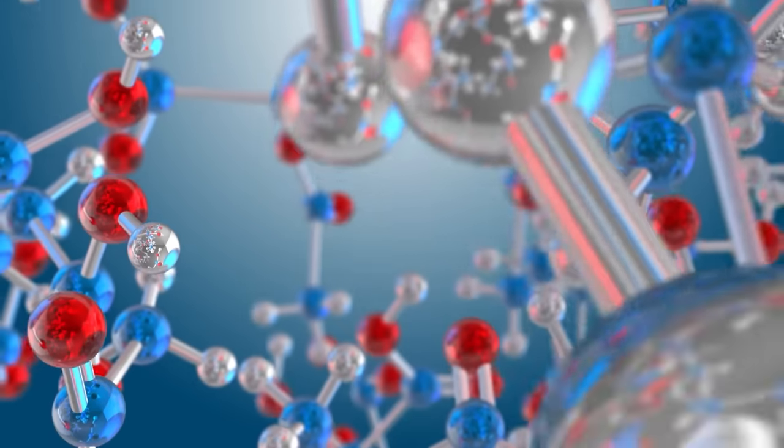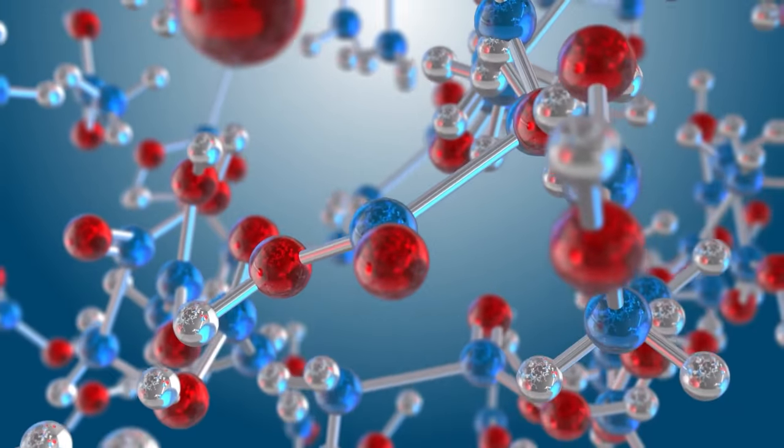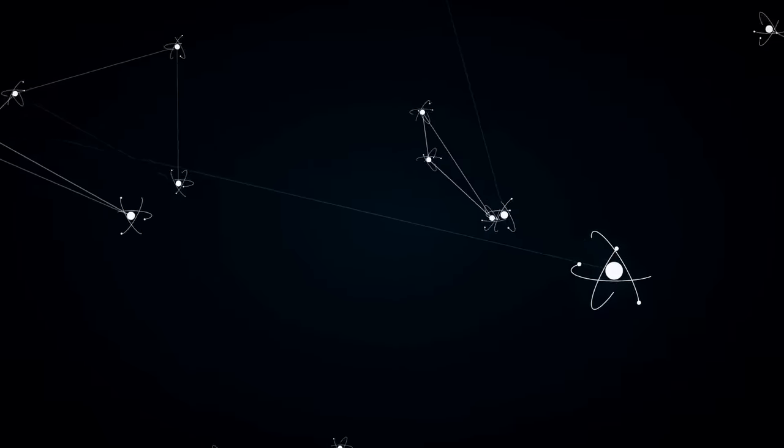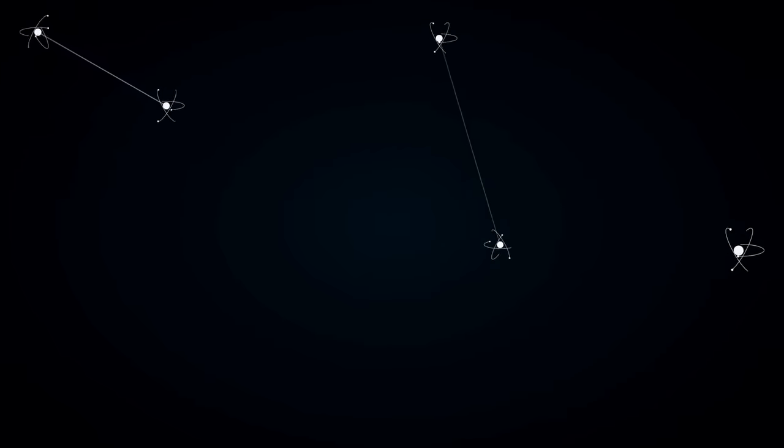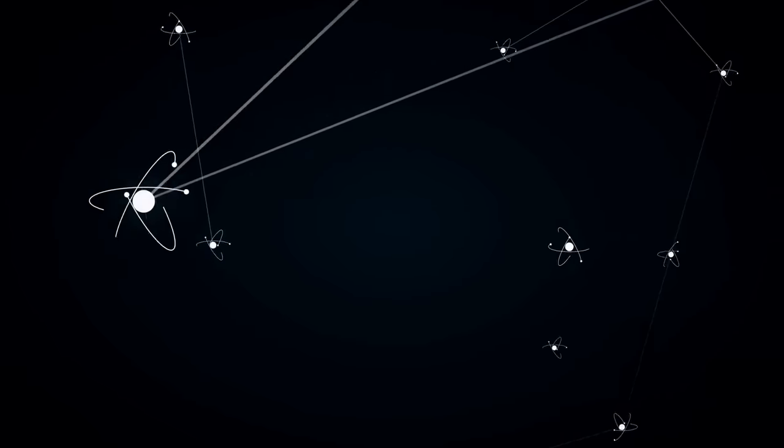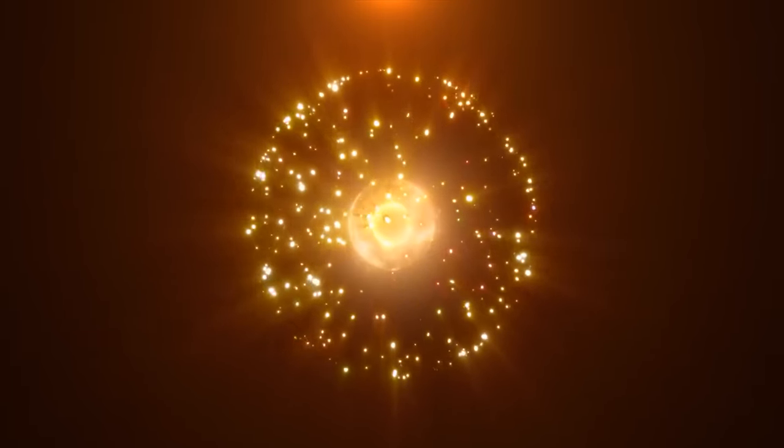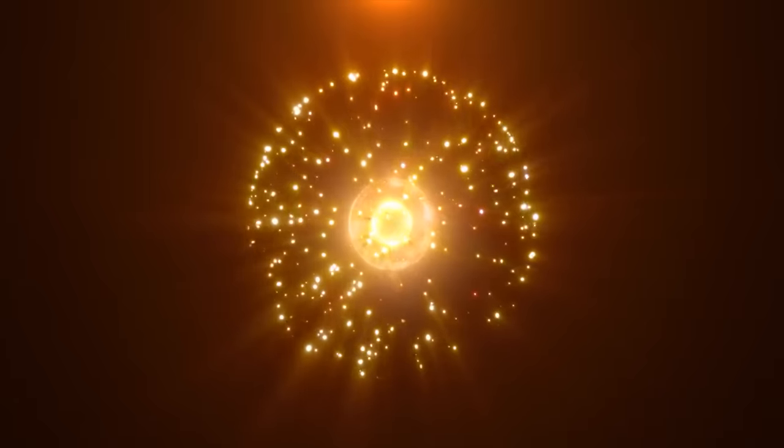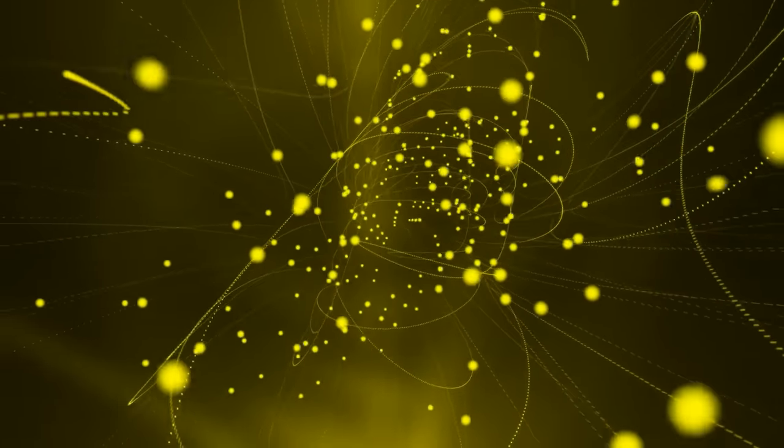The sensation of solidity when touching an object, like a table, is intricately tied to the dynamic interactions of electrons within atoms. As you extend your hand to touch the table, the electrons in the atoms of your fingers come into proximity with the electrons in the atoms of the table. When the electrons of one atom approach the nucleus of another atom, the established dance patterns of their movements undergo a transformation. This transformation arises because an electron in a lower energy level around one nucleus cannot replicate the same dance around the other nucleus, as that particular slot is already occupied by one of its own electrons.